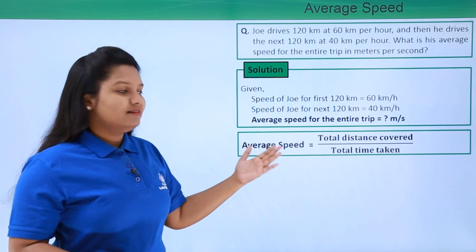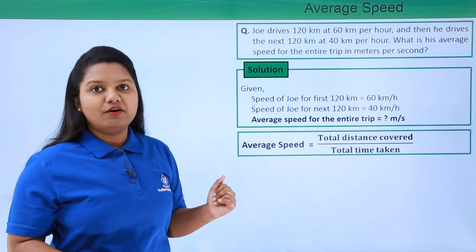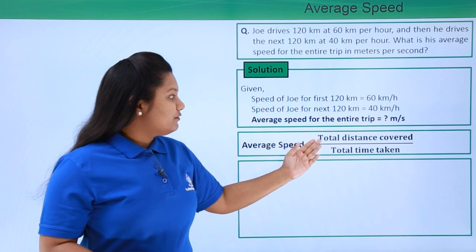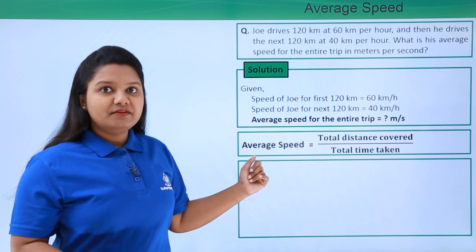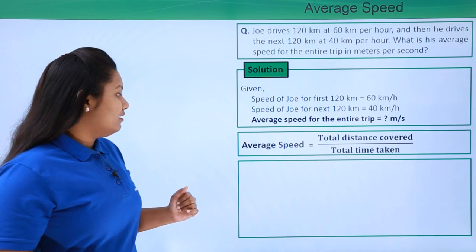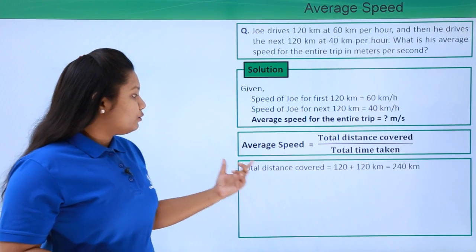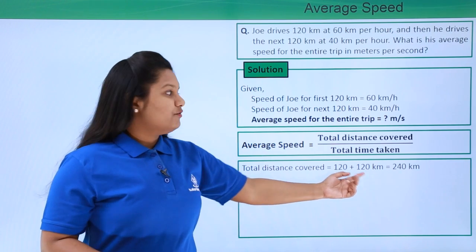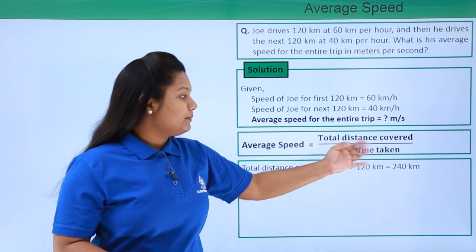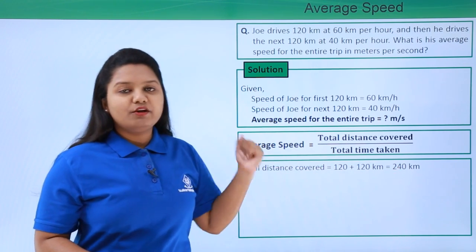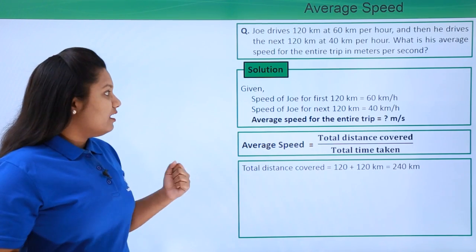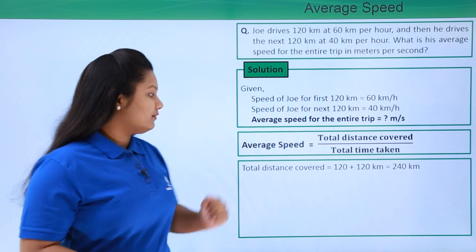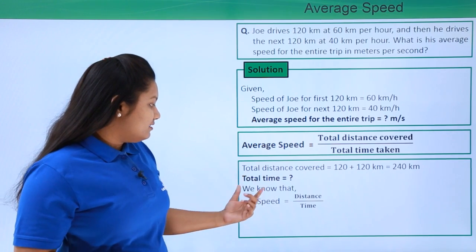Let's first find the total distance that Joe has covered in the entire trip. The total distance becomes 120 kilometers plus 120 kilometers for the two trips, which is 240 kilometers in total.